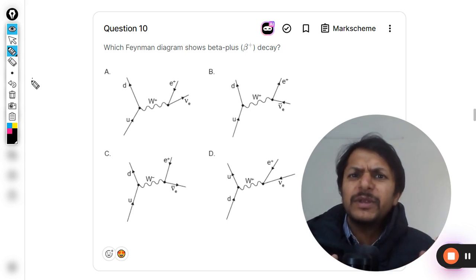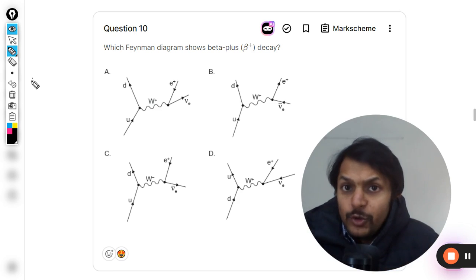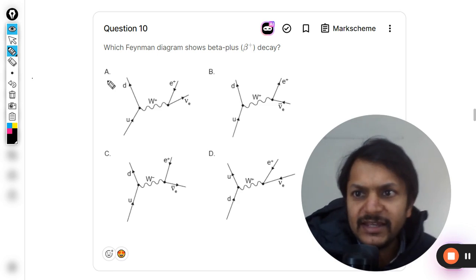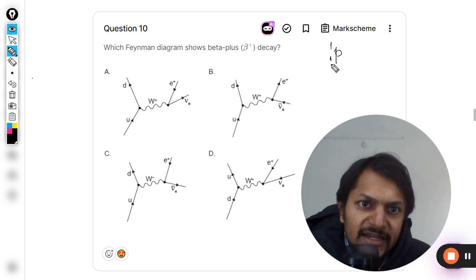We have been discussing those two reactions so many times now, so you must already be knowing it, but I'll write it here also. Beta plus decay is a decay of the proton, and the proton decays into a neutron.